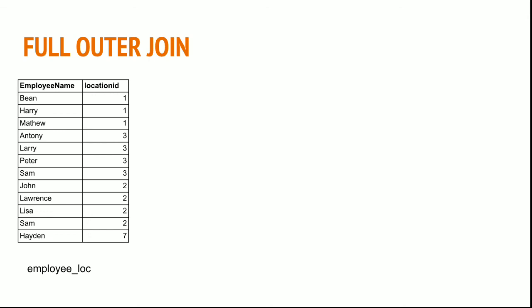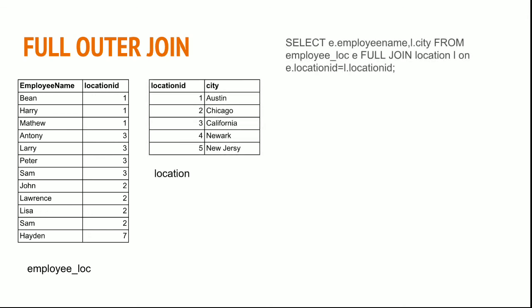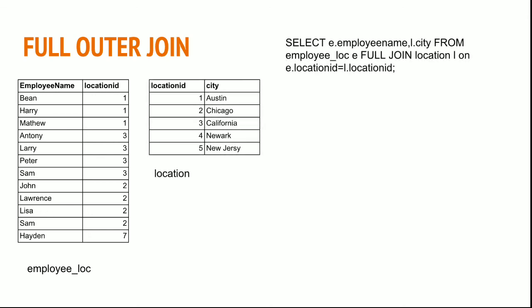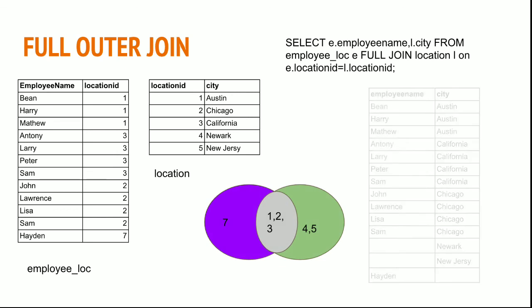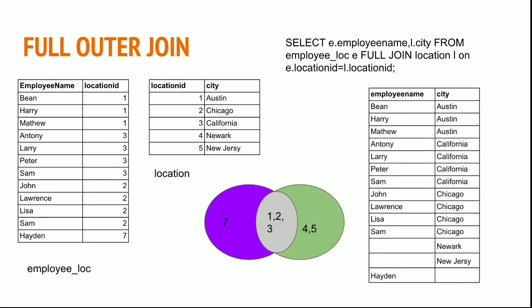Full outer join: if I need records from both tables — including the employee with location ID 7 as well as New York and New Jersey — I will get them this way. You can see that employee name is null for New York and New Jersey, and city name is null for the employee with location ID 7. This is full outer join. Thank you.